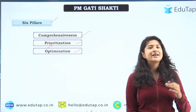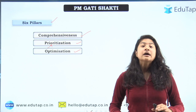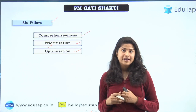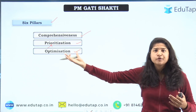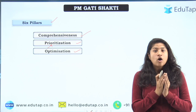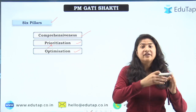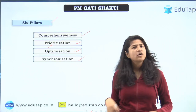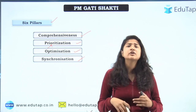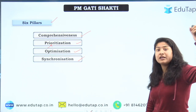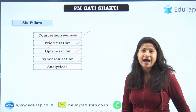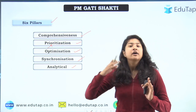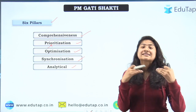The third pillar is optimization. For example, if a fertilizer plant has been set up but there is no access to pipelines, that fertilizer plant would be of no use. So the pipeline department must come up first and set up the pipeline so the fertilizer plant can be utilized. The fourth pillar is synchronization — when different departments work together with an idea of what the other is doing, using the online portal, there will be sync in their work. The fifth pillar is analytical — with the help of that portal, one ministry can analyze the functions being done by other departments and schedule their work accordingly.